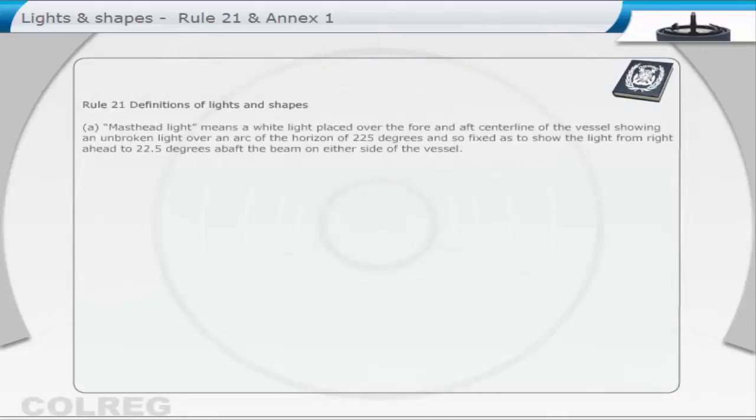Masthead light means a white light placed over the fore and aft centreline of the vessel, showing an unbroken light over an arc of the horizon of 225 degrees, and so fixed as to show the light from right ahead to 22.5 degrees above the beam on either side of the vessel.